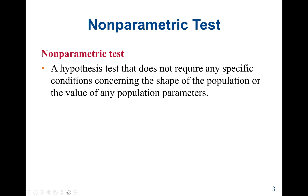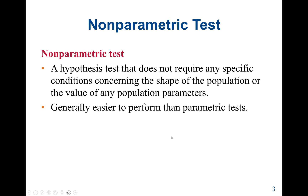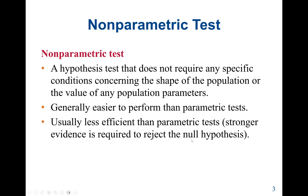A sign test is a non-parametric test, which is a hypothesis test that does not require any specific condition concerning the shape of the population or the value of any population parameters. With parametric tests, one of the main conditions is that the population distribution must be normal — we have to check for normality. With non-parametric tests, there is no required specific condition and no conditions for population parameter values. Generally, non-parametric tests are easier to perform than parametric tests, but usually less efficient.